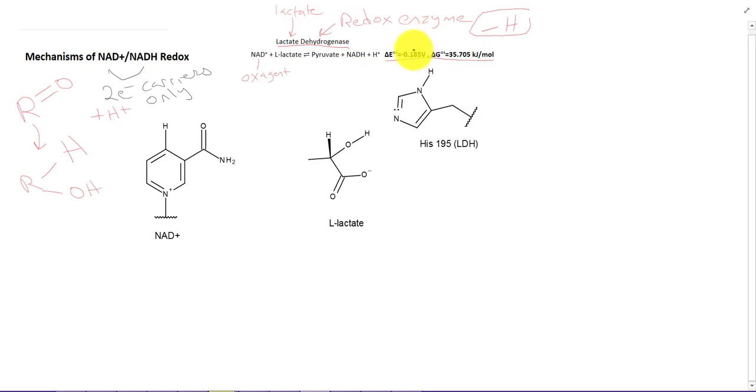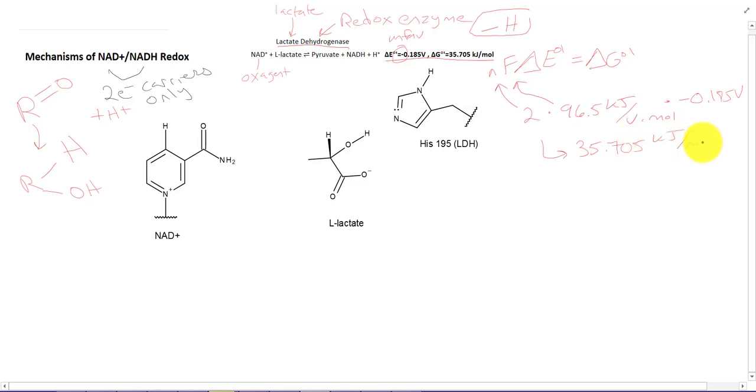Thermodynamics for this reaction are as follows. As written, the standard cell potential between products and reactants is negative 0.185 volts. The negative means that it's unfavorable, naturally unfavorable under standard state conditions. We can convert between delta E and delta G using the simple equation NF delta E is equal to delta G. It's a two electron transfer. So we get a free energy change of 35.705 kilojoules per mole. Under standard state conditions, we end up with a very unfavorable reaction between NAD and lactate to produce pyruvate.